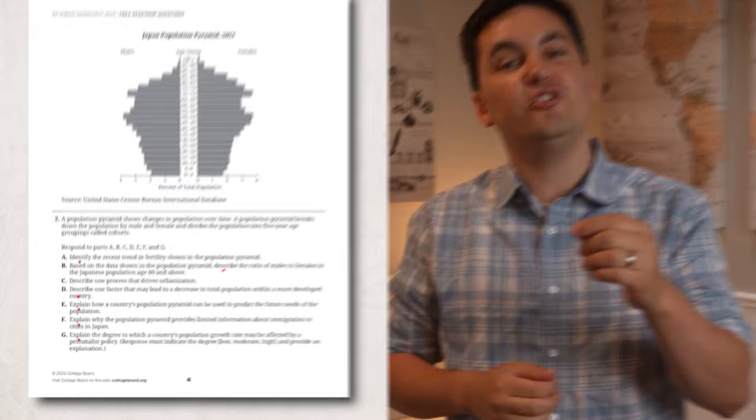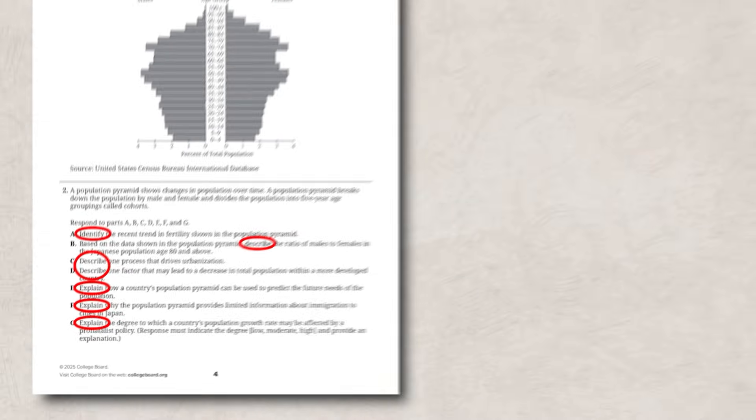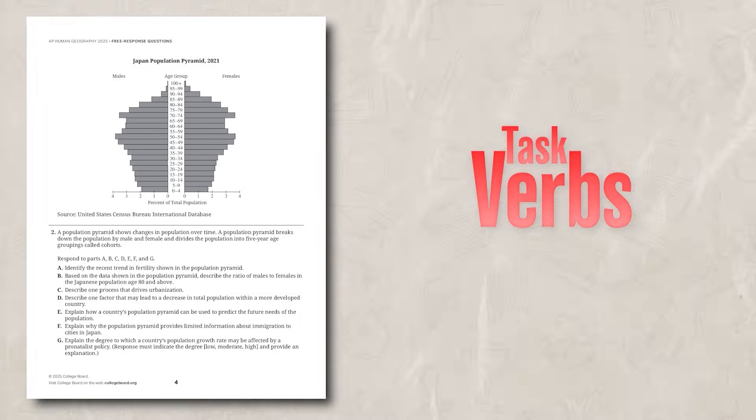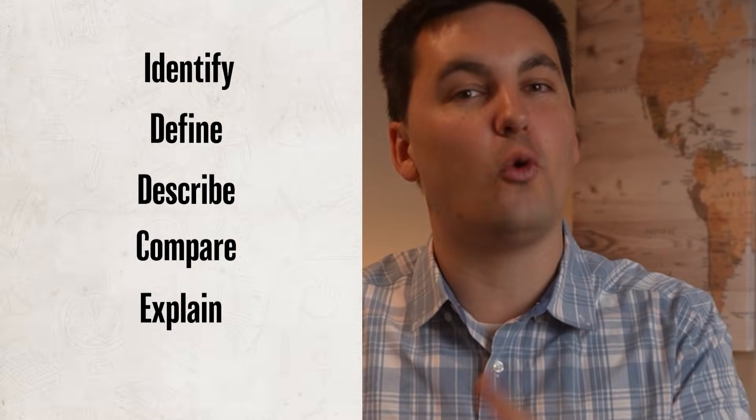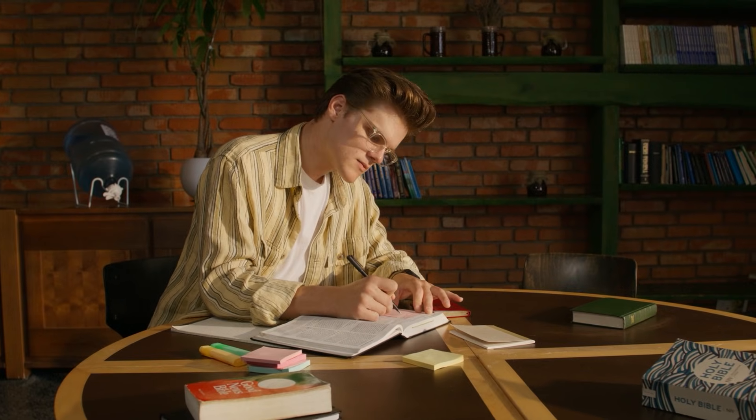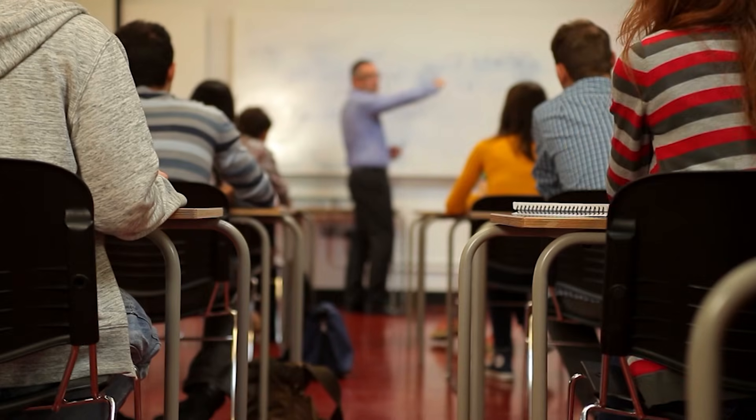Now I want to draw your attention back to the example FRQs. Notice how each question is being asked — all the FRQs use task verbs. For AP Human Geography, every FRQ will always only use these task verbs, with each task verb requiring you to answer a question in a specific way. This means you can study and review the set task verbs before the test, allowing you to better understand exactly how the questions will be asked. Understanding each task verb goes a long way.